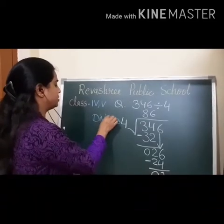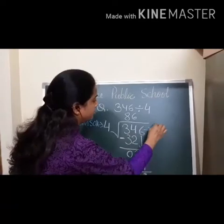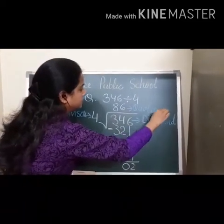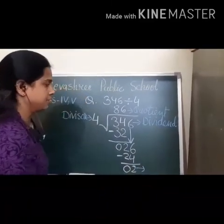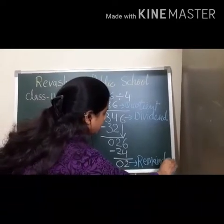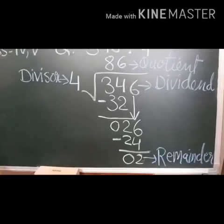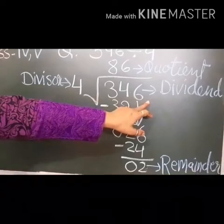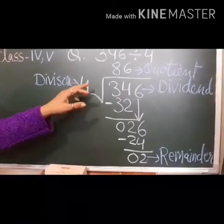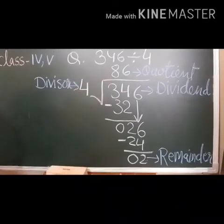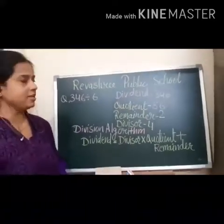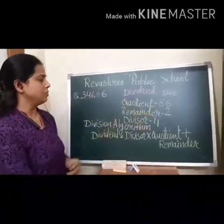This is the divisor. This number is the dividend. The number to be divided is called the dividend. The number by which we divide is called the divisor. The answer is called the quotient. The number that is left over is called the remainder. So here, dividend is 346, quotient is 86, remainder is 2, and divisor is 4.